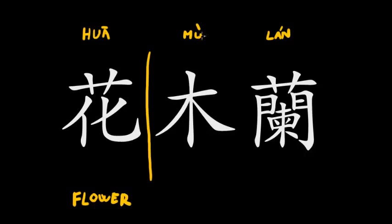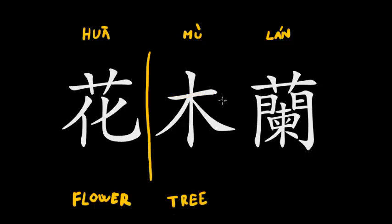The next character is very easy — it is pronounced Mu and it means 'tree' or 'wood.' It is very easy to write because it doesn't have any separate right, left, top, or bottom sections. It's just one character, and all you need to know is the sequence of strokes. Let me show you: one, two, three, four.